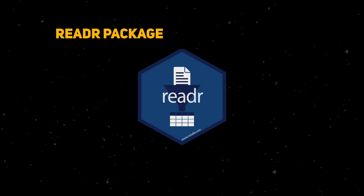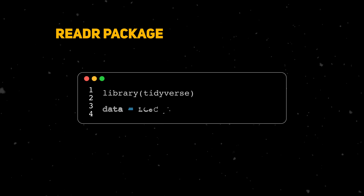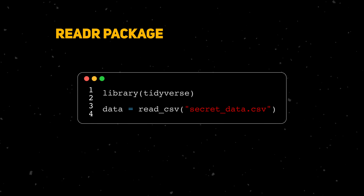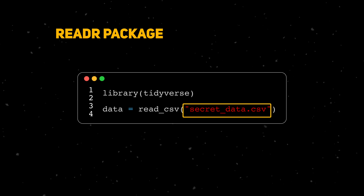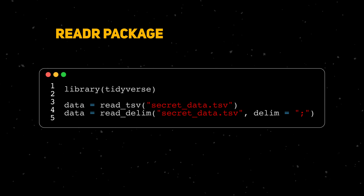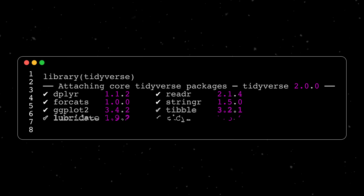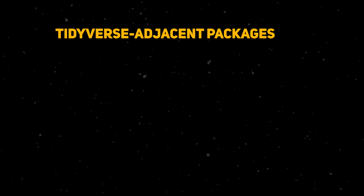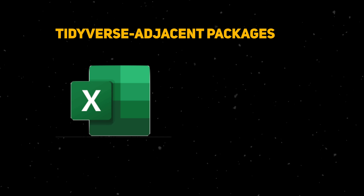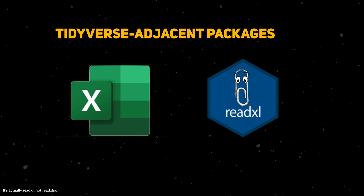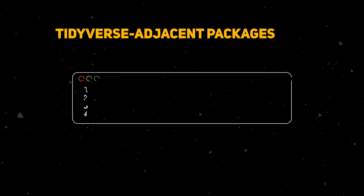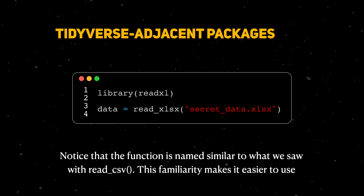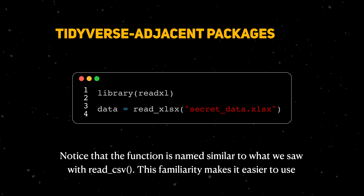The first step in the cycle is to load the data, and this is the domain of the readr package. The most important functions come from the read family — for example, if you're working with comma-separated value files or CSV files, the read_csv function is what you'll use most. There are equivalent functions for TSVs and other delimited files. The core tidyverse is a set of nine libraries, but there are many other tidyverse-adjacent packages — for example, Excel files are not natively supported by readr, but there's a package called readxl that serves this purpose. Its workhorse function is read_xlsx, which follows a similar format to the read family.